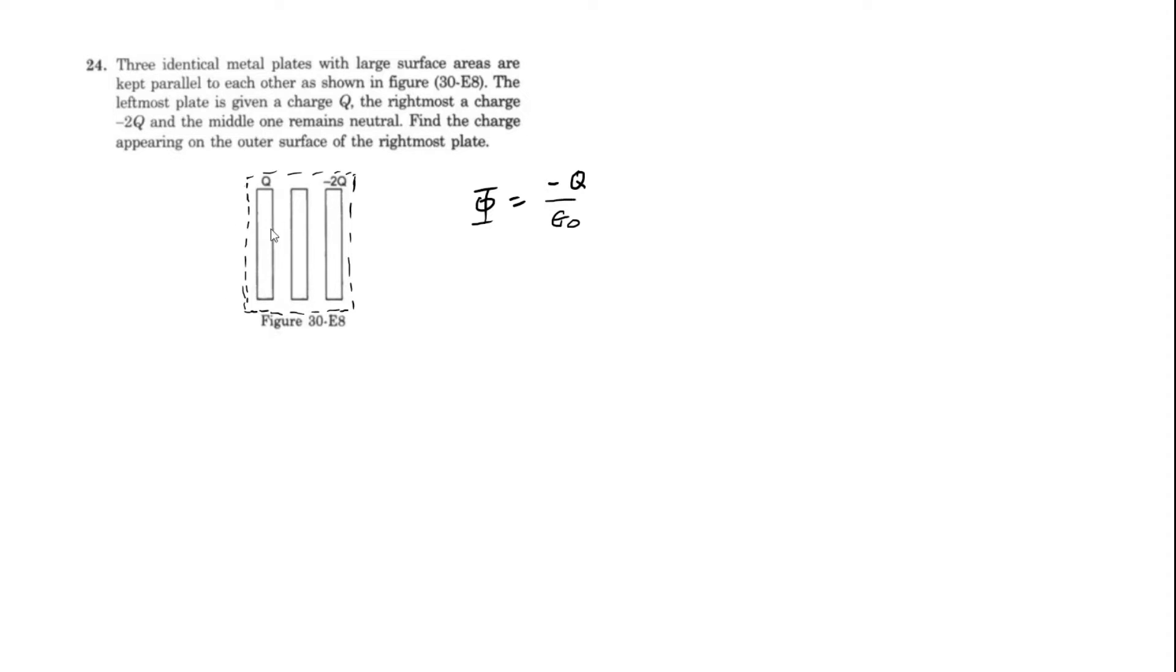And by symmetry, because these two sides with very large surface areas, these two will have the same flux through it, as you've probably seen in many other problems. And that gives the flux through each of these sides. The flux is going to be negative Q over 2 epsilon naught. And same for this side too.